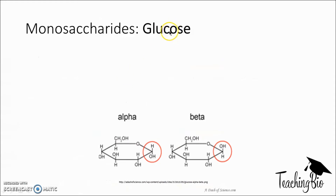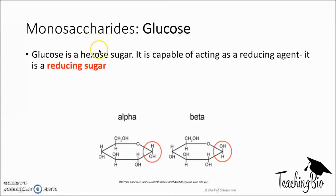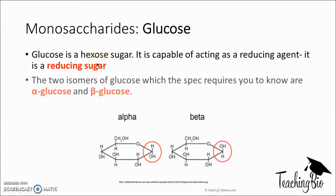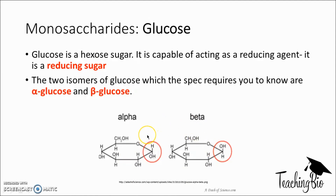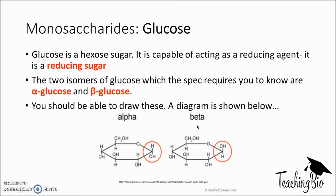Glucose is obviously the key monosaccharide and you need to know that it's a hexose sugar and also a reducing sugar. There are two isomers of glucose - an isomer is basically the same compound but just a different version of it. You need to know about alpha glucose and beta glucose and what they look like. For alpha glucose it's H and OH, whereas for beta glucose it's OH and H. Everything else is the same. The way to remember this is that alpha has an H in it, therefore H is at the top, and beta doesn't, so it's the opposite.